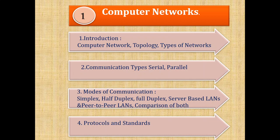So that was all about our first chapter Computer Networks, where we are going to study Computer Networks, Topologies, and Types of Networks. In the second part we study Communication Types — Serial and Parallel. Then Modes of Communication — Simplex, Half Duplex, and Full Duplex. Then Server-based LANs and Peer-to-Peer LANs and their comparison. And lastly, Protocols and Standards, which need to be followed for all the above to happen.